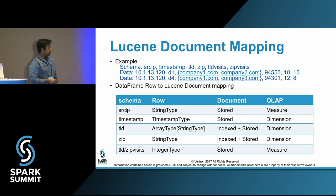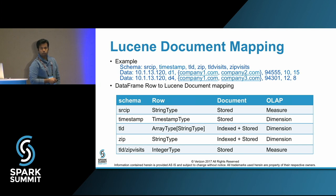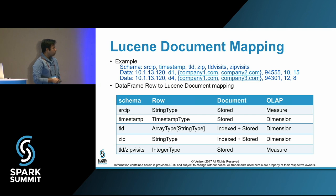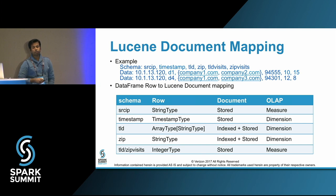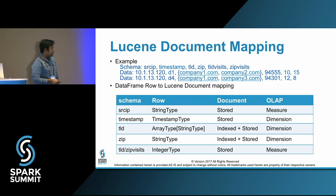Timestamp is a timestamp type in a DataFrame — that also becomes stored and it's a dimension. TLD, for example company1.com or company2.com, is a multi-value dimension — it's an array of string type in a row. When we map it to a Lucene document, the dimension is indexed so that it can be searched on, and also stored so that we can run analytic processing on top of it. Similarly for zip, the TLD and zip visit are integer types in a row and become stored fields on which you can do any aggregations.